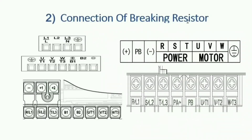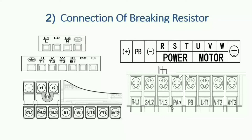Where do we connect the braking resistor in a VFD? I have shown you four different types of VFD terminal images. In this one, B1 is positive and B2 is the braking point, so we connect the resistor between B1 and B2. Similarly, in another drive it is between positive (+1) and PB. In another it is PA(+) and PB, and in another it is B1 and B2.